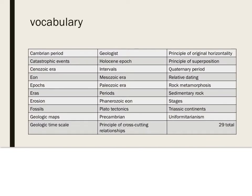Get out that science notebook and create a new section titled Earth and Space Science. Take notes and draw pictures as you follow along. Go ahead and copy down these 29 vocab words — they go in ABC order. Come back later and create your own definitions using your own words and draw pictures. Pause this if you need to finish writing down the vocab words.